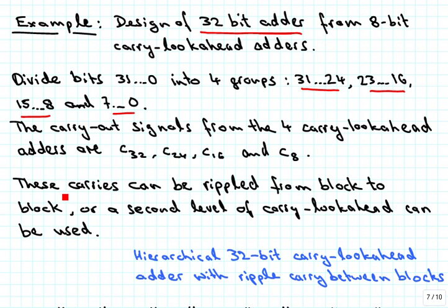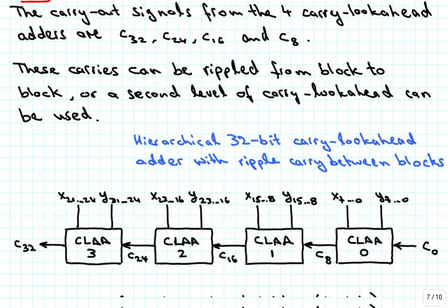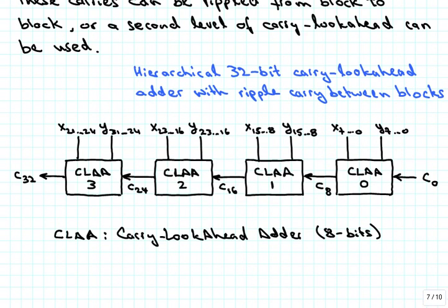These carries can be rippled from one block to the next block, or we can try to use a second level of carry lookahead to speed things up. We look at both of those cases, starting with the hierarchical 32-bit carry lookahead adder with the ripple carry between blocks.